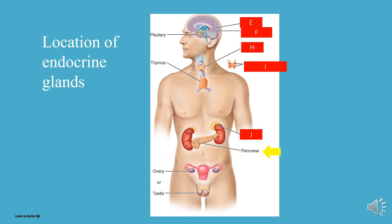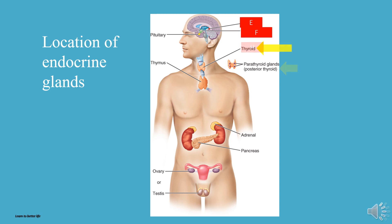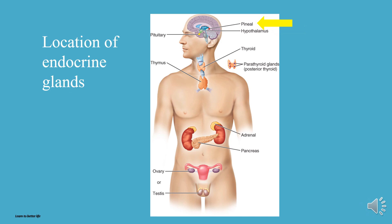K is the pancreas. J is the adrenal gland. I is the parathyroid glands — they are behind the thyroid. H is the thyroid. F is the hypothalamus. E is the pineal gland.